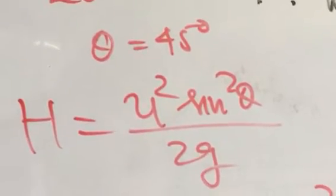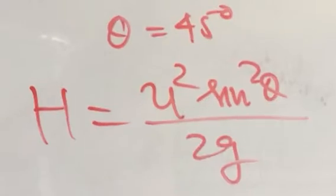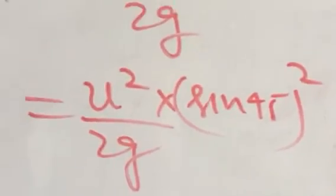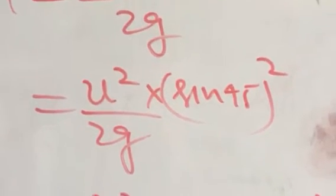Then H is equal to u square sine square theta upon g. This is a height formula. When we add theta value here, we get H is equal to u square upon 2g sine 45 square.